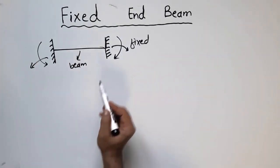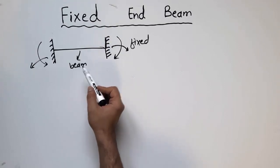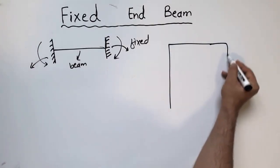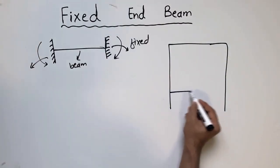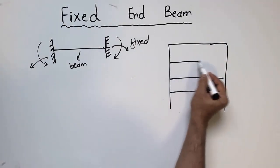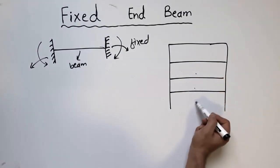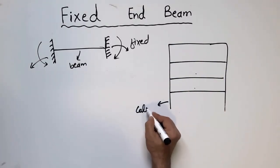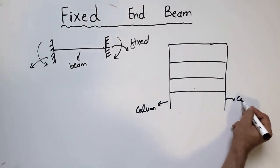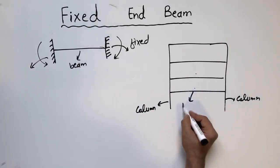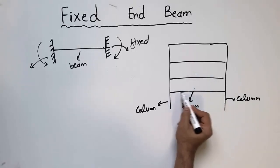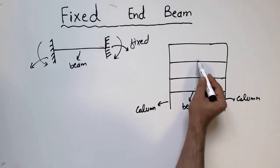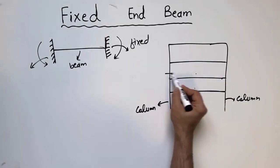Now, where can we find this fixed ended beam in real construction? Let's consider a three or four story building with different floor levels — one, two, three, and a ground floor. This building has columns on either side, and another column in between. The horizontal member connecting them is the beam, which is supported by these columns at its respective ends, so in each floor we have one beam.